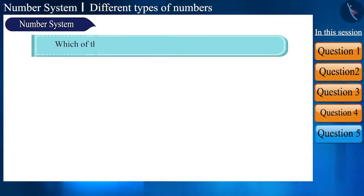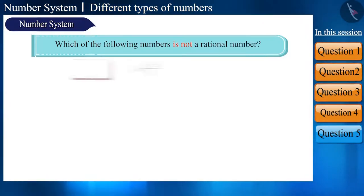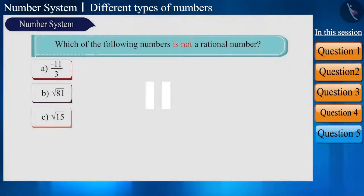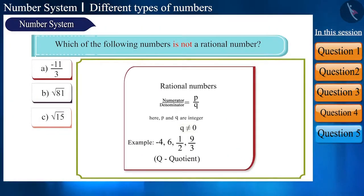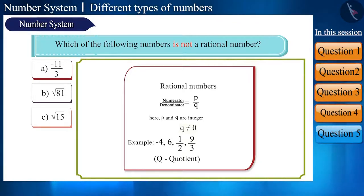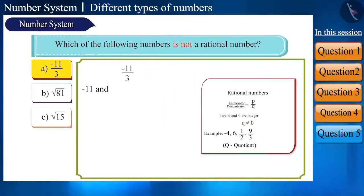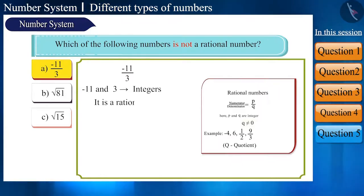State which of the given numbers is not a rational number. You can think of your answer by pausing the video. This question is on rational numbers, so while solving it, keep in mind the definition of a rational number. Let's see the first option: −11/3. By definition, both −11 and 3 are integers and the denominator is not 0. Therefore, it is a rational number.